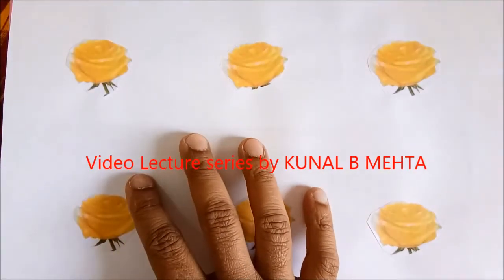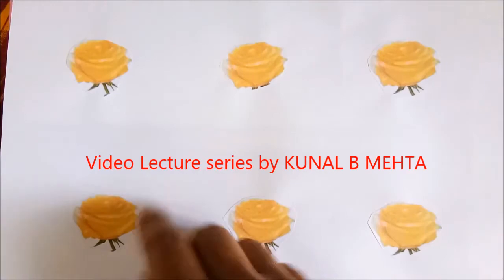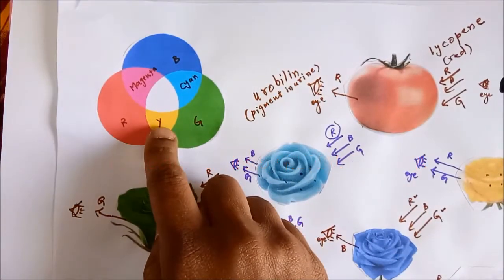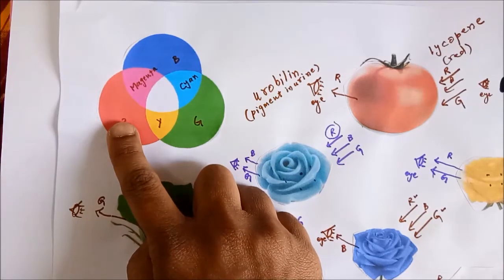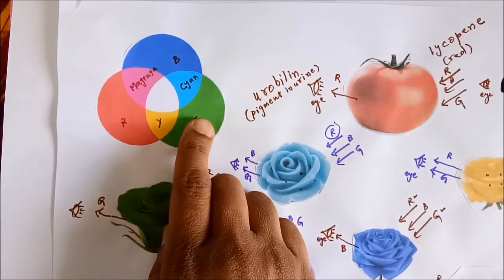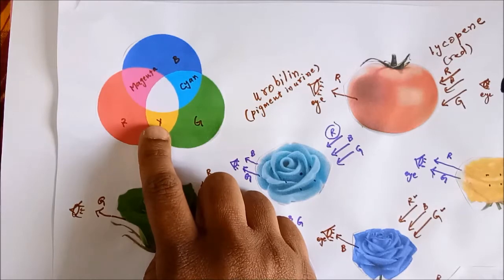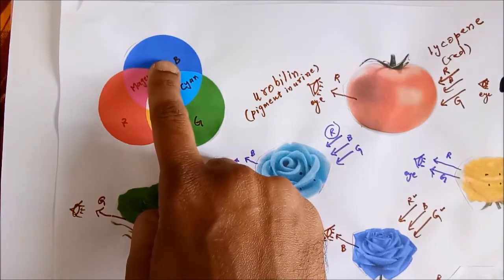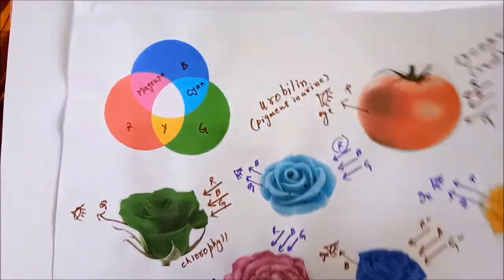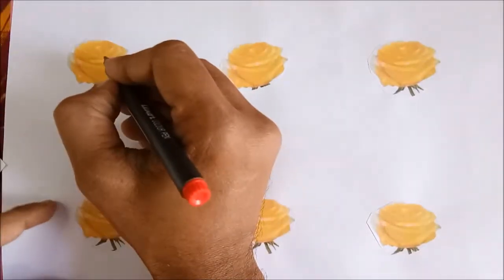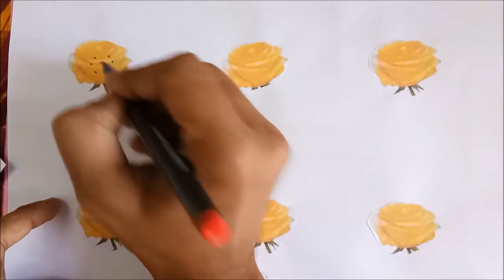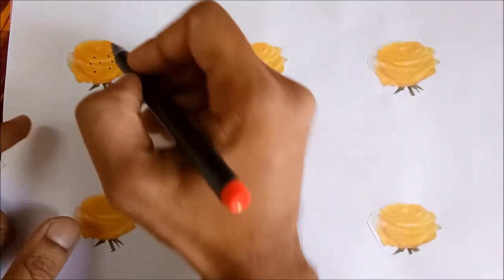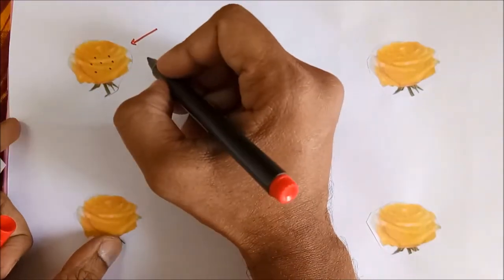Hello everyone, let us continue our discussion with yellow flower this time. Yellow is again the secondary color, and the yellow color is made up of red and green. Yellow color substances are made up of pigments that absorb its complementary color, that is blue. So this yellow flower is made up of pigments that are capable of absorbing only blue color.